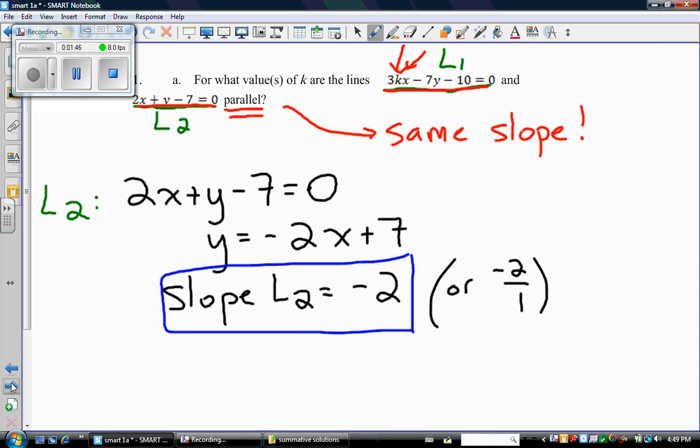Now let's go back and look at line number 1. Line 1 says 3kx minus 7y minus 10 equals 0.